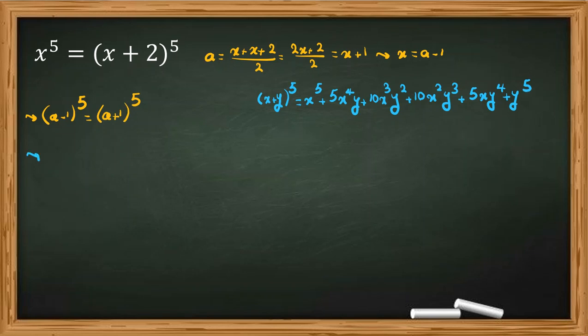And then here, if we do that, it will be a to the 5 plus 5 times negative 1, a to the 4. Let's do this. 5 times a to the 4 times negative 1 plus 10 times a cubed negative 1 squared plus 5 times a squared negative 1 cubed. Let me check. Yes.